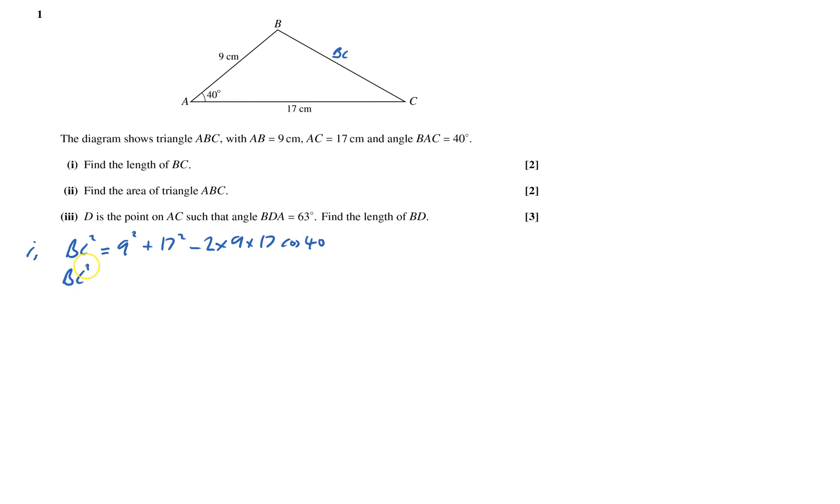And that gives me BC squared equals 135.5904. And occasionally if you get to square root it, then you'll see 135. No way. 9.17. It's just not going to happen.